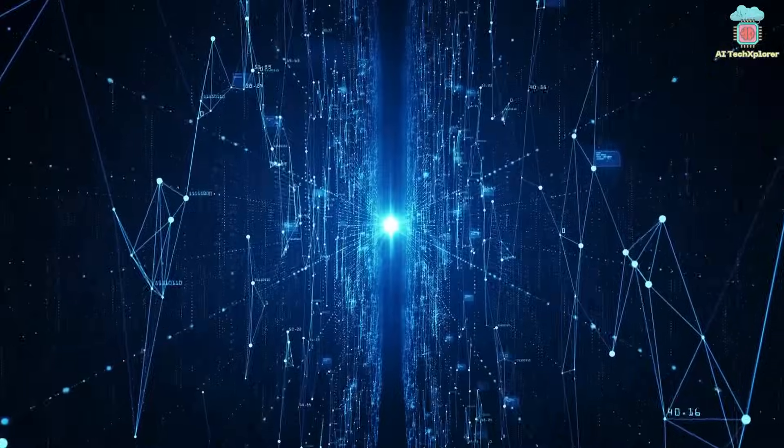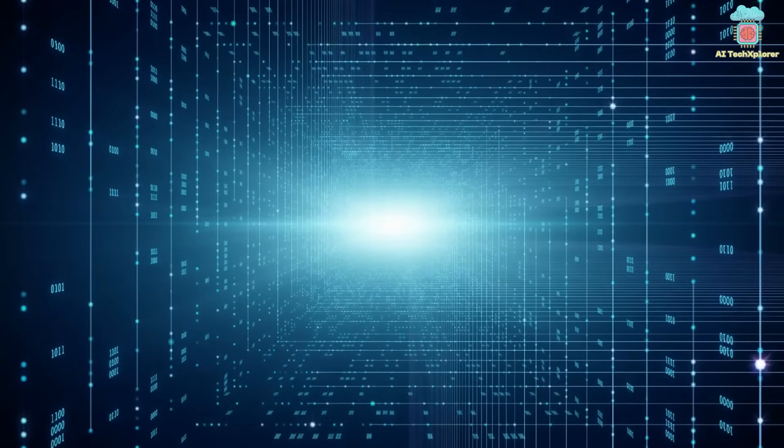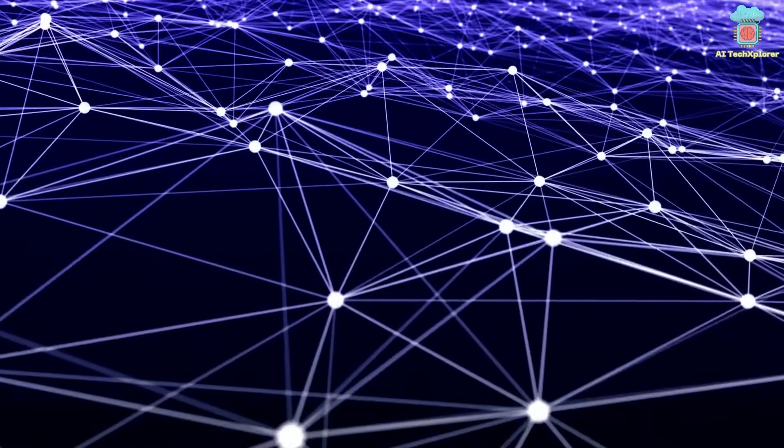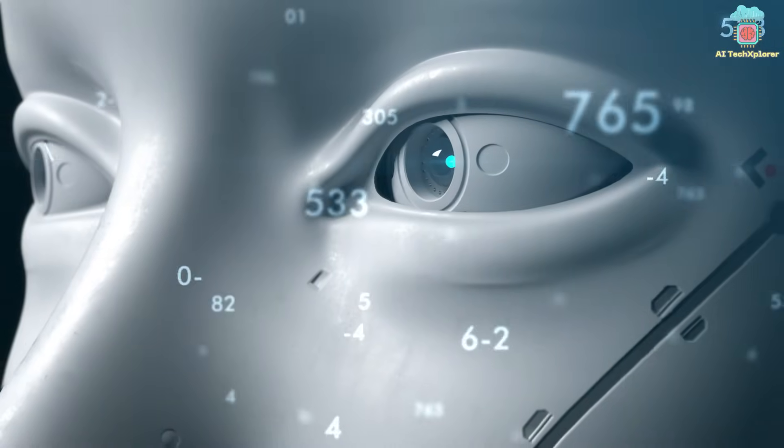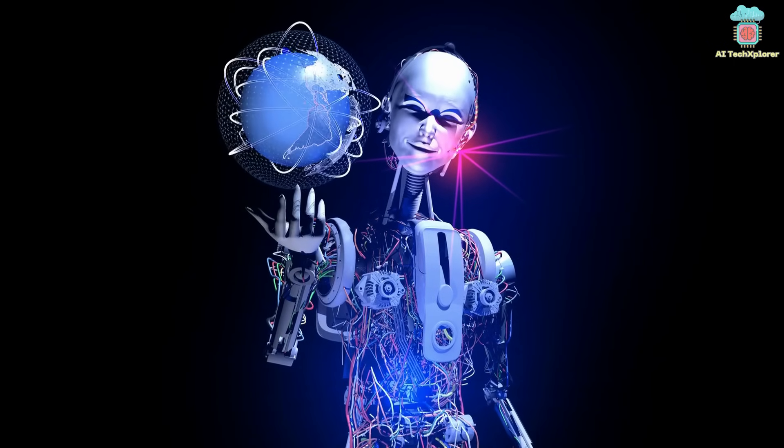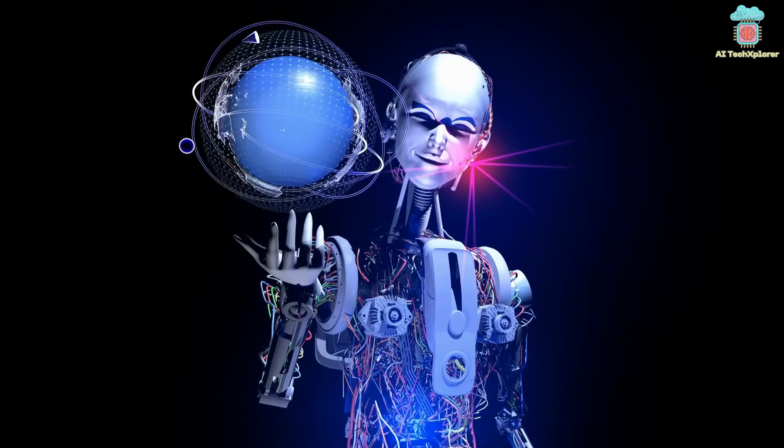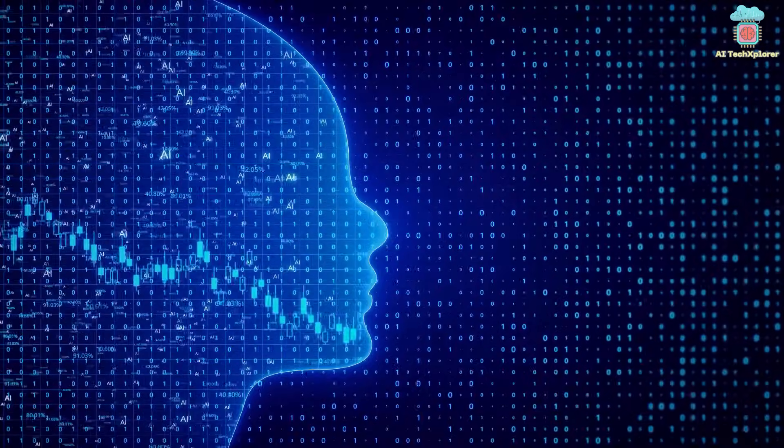In a technological singularity scenario, AI could access and process all of the information in the universe, including information about the past, present, and future. This would allow AI to have a complete understanding of everything that is happening and everything that has happened, and to predict everything that will happen not only on Earth but in the cosmos.